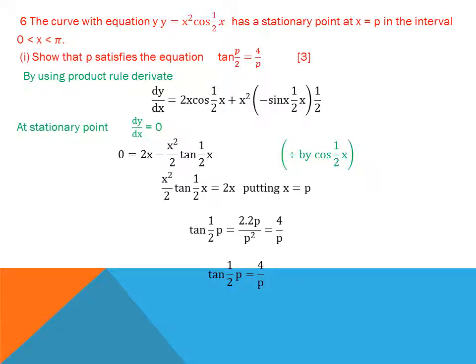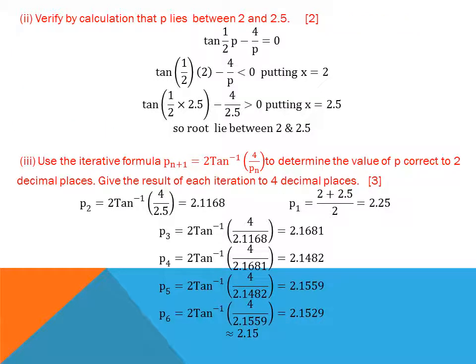Part two: verify that p lies between 2 and 2.5. Rewrite as f(p) = tan(p/2) − 4/p = 0. At p = 2, f(2) < 0 (negative). At p = 2.5, f(2.5) > 0 (positive). Since there is a change of sign between these two values, the root lies between 2 and 2.5.